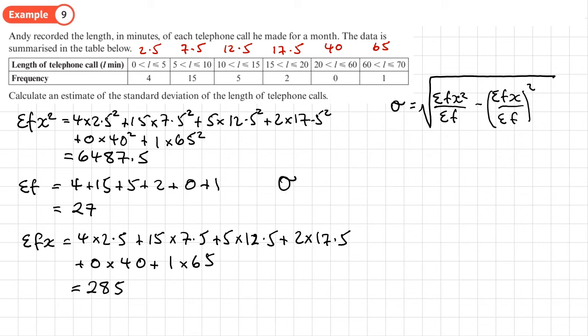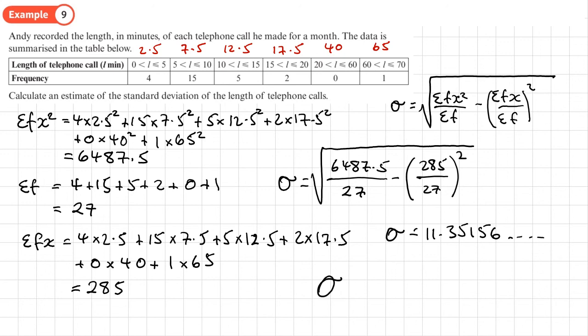Now we're ready to put all the values into the formula. It's the square root of sum of FX² (6,487.5) over sum of F (27), minus the mean squared. The mean is 285 over 27, squared. Putting all of that into our calculator, we get 11.35156. To three significant figures, that's 11.4.